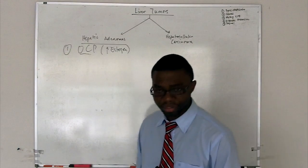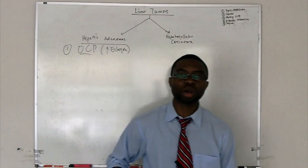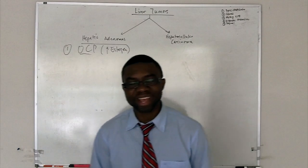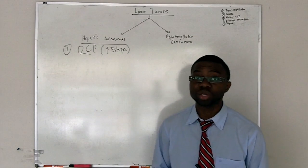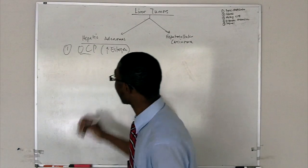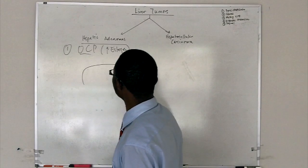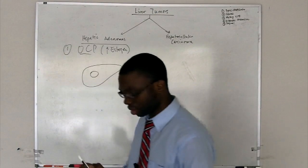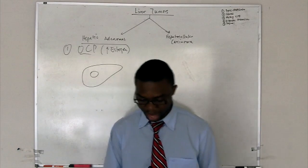So history and physical wise, it's really nonspecific. Right upper quadrant pain, you really can't really get much out of it. You do an ultrasound or a CT scan and right in the liver, it's nice, well-rounded, homogenous mass.